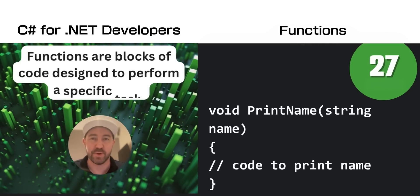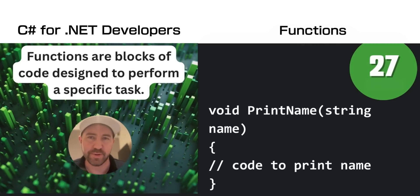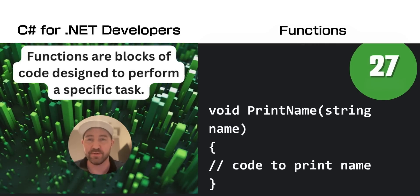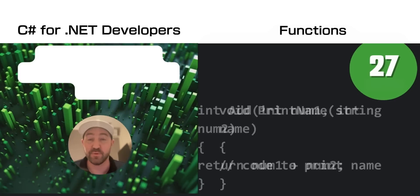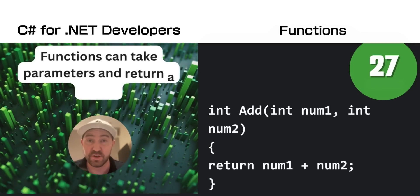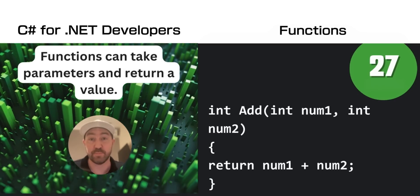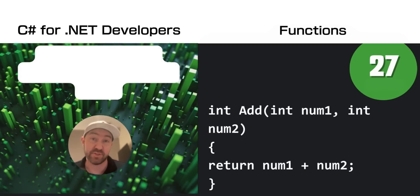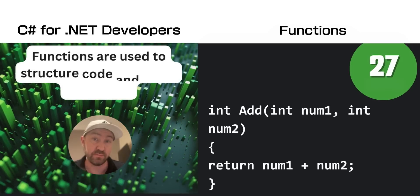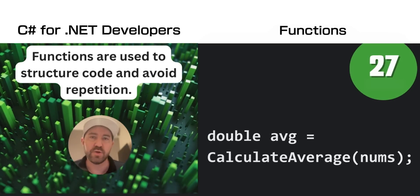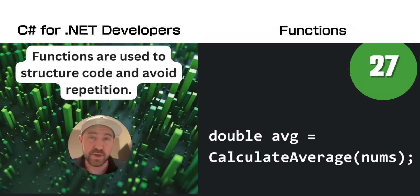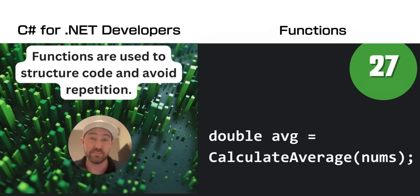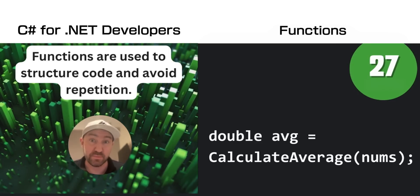Functions are really the building blocks of programming in C# — they're blocks of code designed to perform a specific task. They normally take parameters and can return a value or not. You use functions to structure your code and avoid repetition. You should be using them.